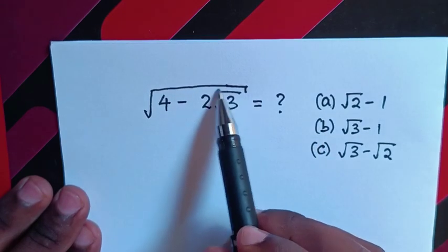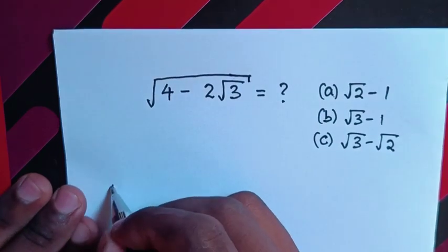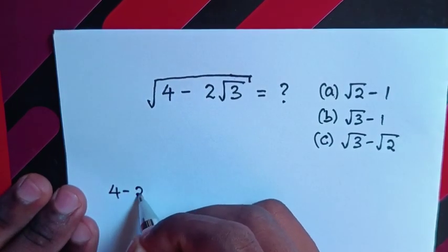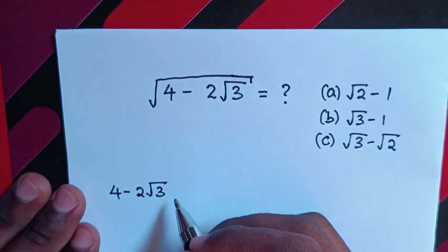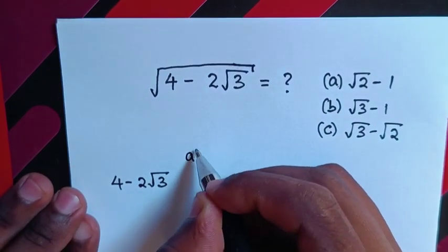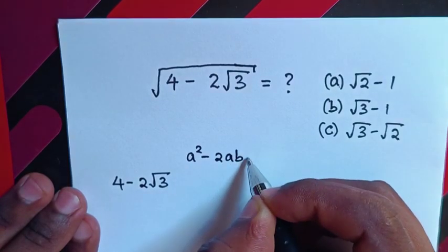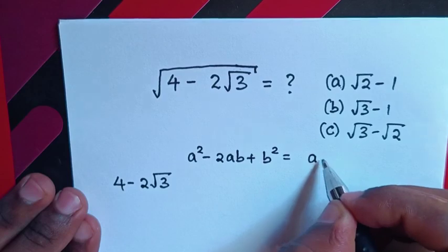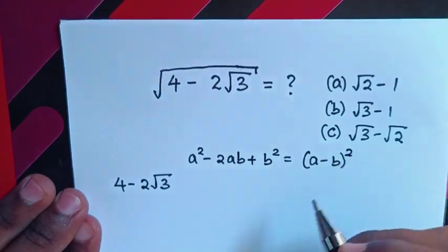So, from the inside expression under the square root, which is 4 minus 2 square root of 3, we'll apply the rule that a squared minus 2ab plus b squared is equal to (a minus b) squared.